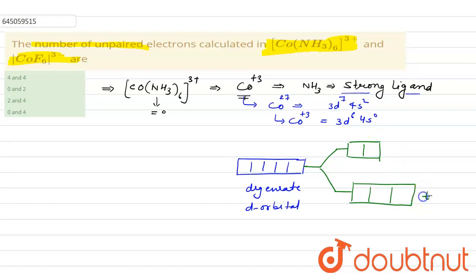This is t2g and this is eg. Now, with a strong ligand, first there will be pairing of electrons. If after the pairing we are left with electrons, then they will be filled in the eg. So first there are six electrons: one, two, three, four, five, six. Now we are left with no electrons, so there will not be any electron in the eg orbital. All the electrons will be present in this t2g orbital, so there are no unpaired electrons.